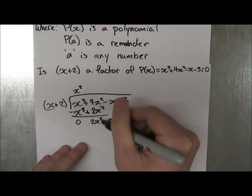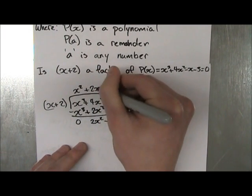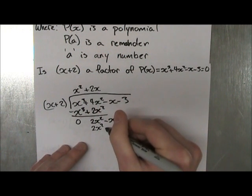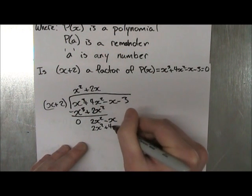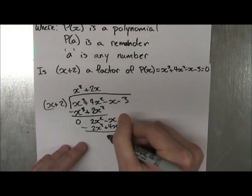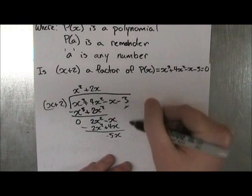What times x is equal to 2x squared? That's plus 2x. Multiply them out, 2x times 2 is 4x, so 2x squared plus 4x, subtract these two, you get minus 5x, drop the next term, you get minus 3.